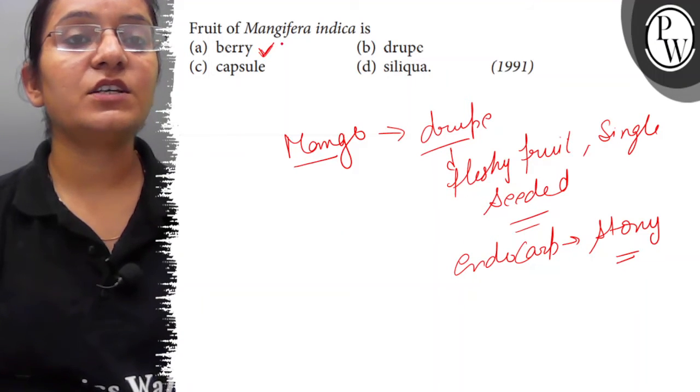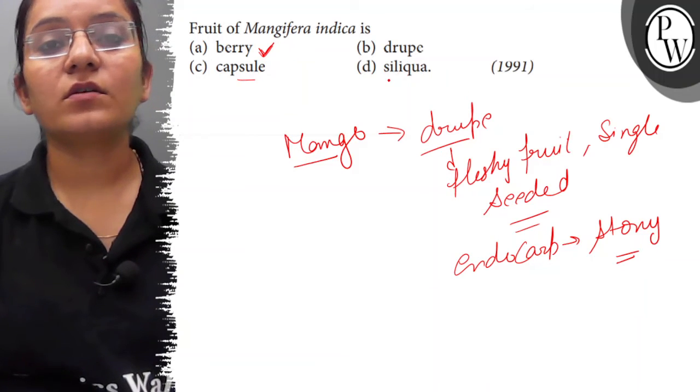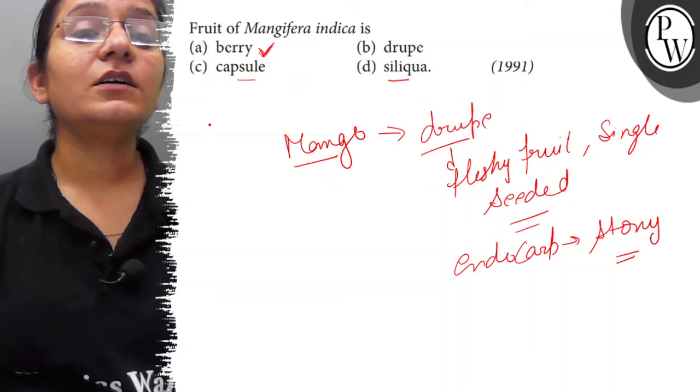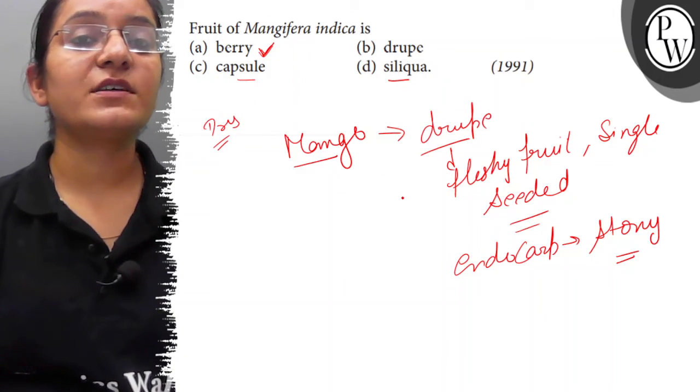So, it has many seeds so it is not a correct answer. And capsule and siliqua are the dry fruits. These are dry fruits while the mango is a fleshy fruit.